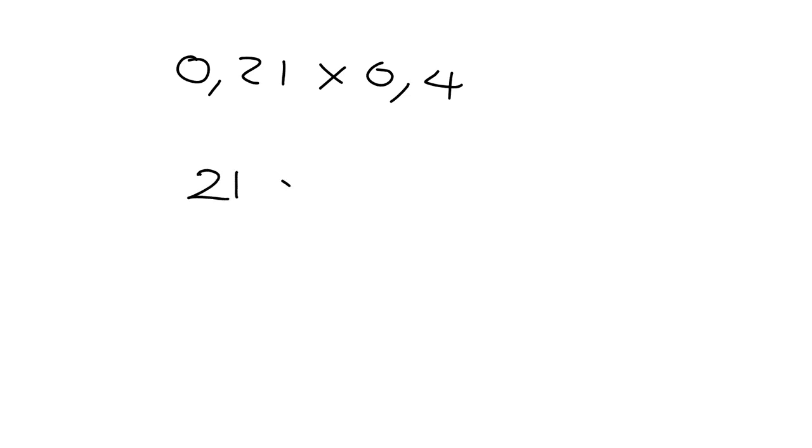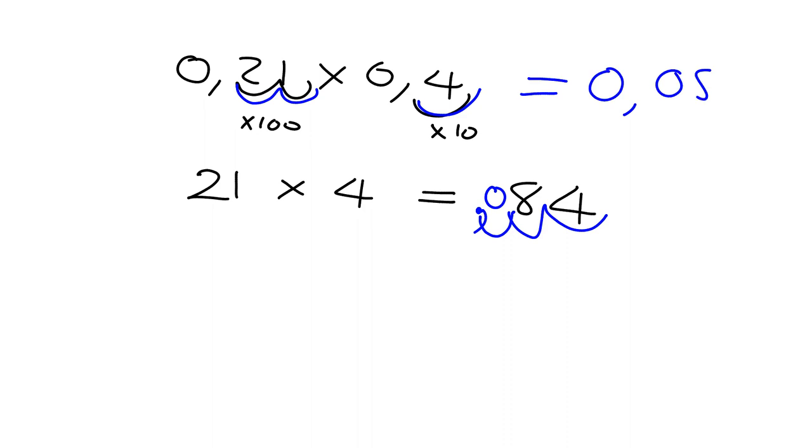To do this one, you do 21 times 4. In order to do that, you've multiplied by 100 and you've multiplied by 10. 21 times 4 should be very easy to get the answer of 84. But that's not the actual answer we want. We cheated here by multiplying by 100, so we must undo that by dividing by 100, and the comma will end up over there. So our answer will be 0.084.